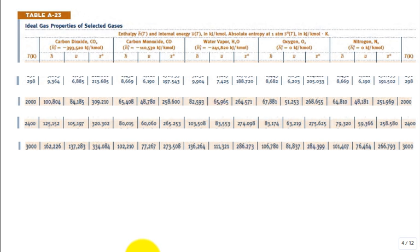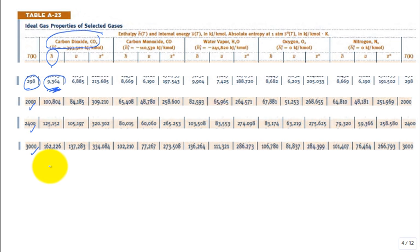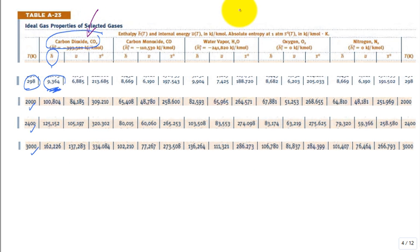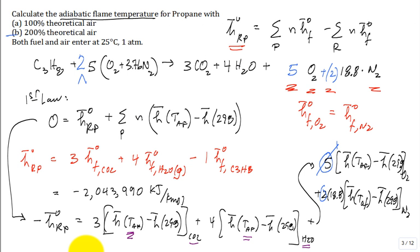This is an exercise of going into the tables and getting the numbers out. You go to the table for carbon dioxide, water, oxygen, and nitrogen, and you need the molar enthalpy at 298 K and at the adiabatic flame temperature coming out. But we don't know the adiabatic flame temperature — is it 2,000 K, 2,400 K, 3,000 K? The strategy is to guess and iterate, a root-finding approach.